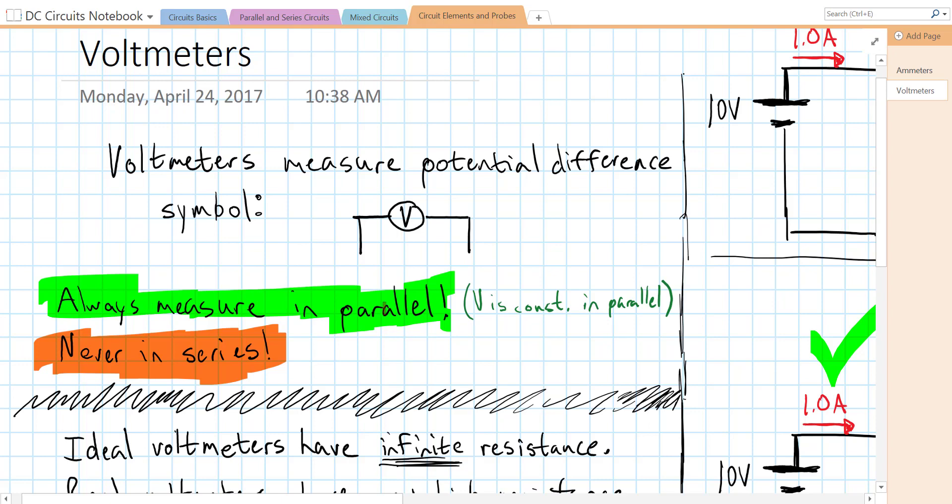We always are going to measure voltage in parallel, not in series. And that's because voltage is constant in parallel, and we're going to look at an example of why that's necessary a little bit later.